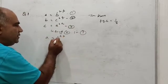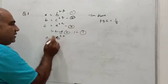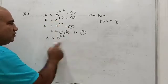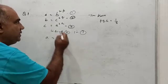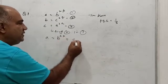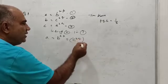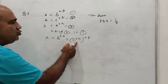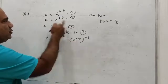In place of b, I will write c^(2q) from equation 2. So a = b^(2p), and in place of b, c^(2q), so that becomes c^(2q) raised to power 2p.